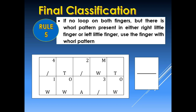The next rule is: if there is no loop pattern on both fingers but a whorl pattern is present in either the right little finger or the left little finger, we are going to use the finger with the whorl pattern. For example, if the right little finger is a tented arch and the left little finger has a whorl pattern, we are going to ridge count the whorl pattern and place it on the denominator since it is taken from the left little finger.